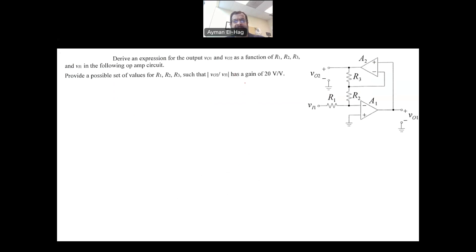So this question says you derive an expression for Vout1 and Vout2 as a function of R1, R2, R3, and Vinput1. And once we get the output, choose the values of R1, R2, and R3 so that the gain, the absolute value of gain, will be equal to 20. So that is an ideal op-amp.